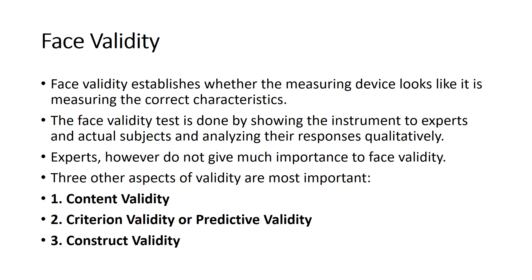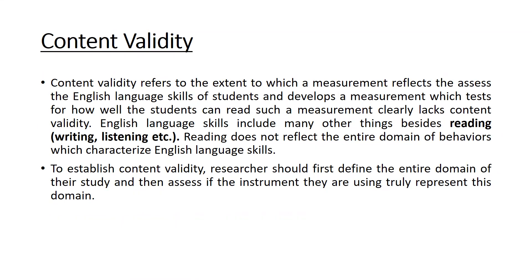The three main constructs are: content validity, criterion validity (also called predictive validity), and construct validity. Content validity reflects the extent to which a measurement covers the full domain it is intended to measure. For example, if you develop a measurement that only tests reading to reflect English language skills, it clearly lacks content validity, because English language skills include other things besides reading — such as writing, listening, etc. Reading alone does not reflect the entire domain of English language skills.